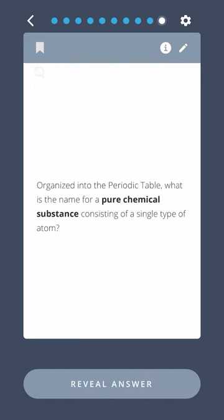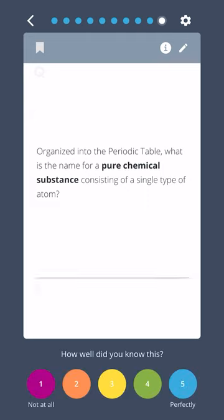Organized into the periodic table, what is the name for a pure chemical substance consisting of a single type of atom? Element.